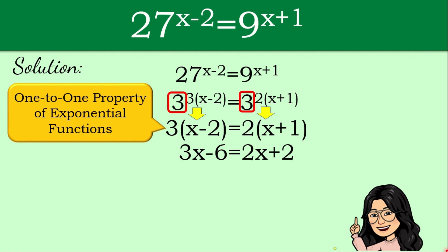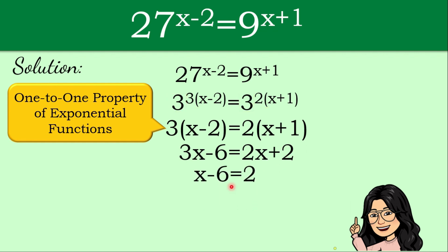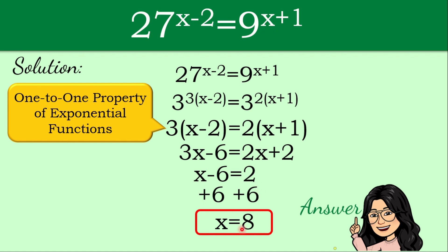We need all variables on the left side and constants on the right side. Since we have 3x and 2x, we subtract 2x from both sides using the subtraction property of equality, leaving x minus 6 equals 2. Then we add 6 to both sides using the addition property of equality, giving us x is equal to 2 plus 6, which is 8. The answer for this exponential equation is positive 8.